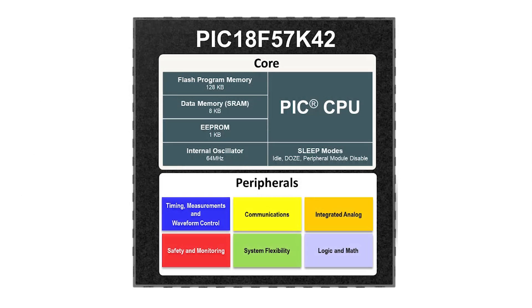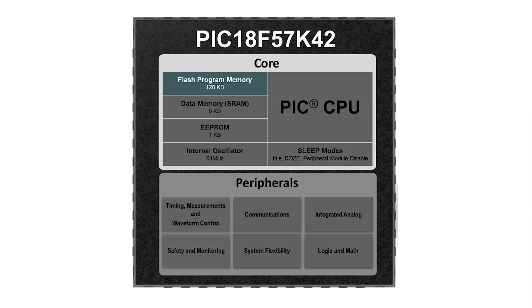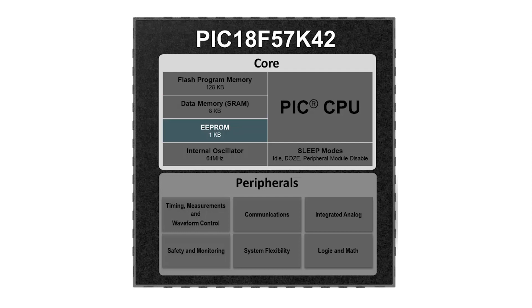The PIC 18F57K42 features a large total memory with up to 128 kilobytes of flash program memory, 8 kilobytes of SRAM, and 1 kilobyte of data EEPROM. Additionally, this PIC MCU has low power mode capabilities such as idle, doze, and peripheral module disable to reduce power consumption.